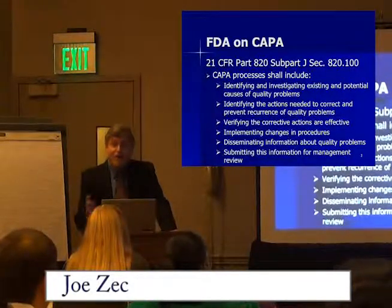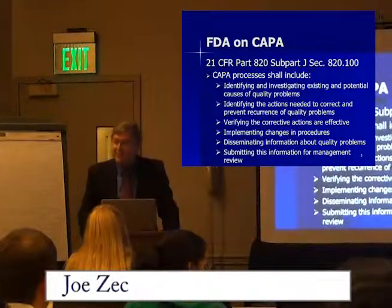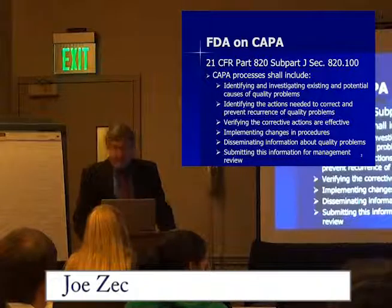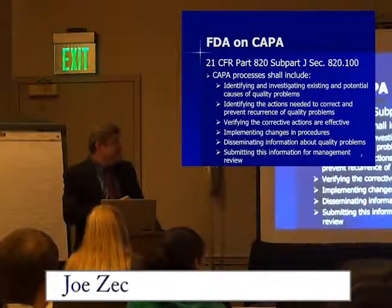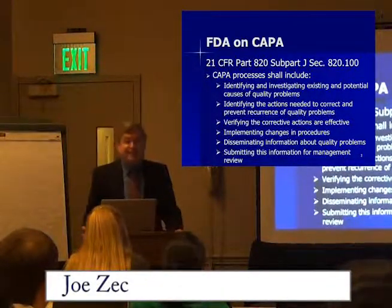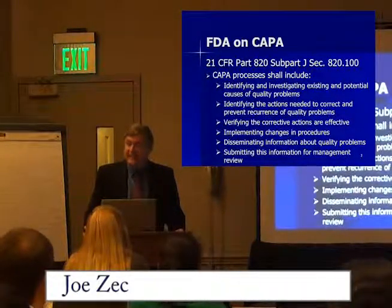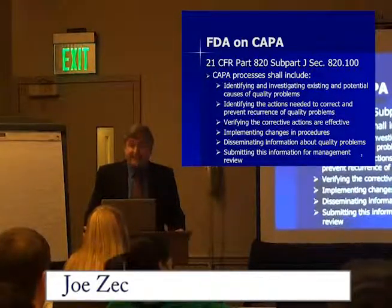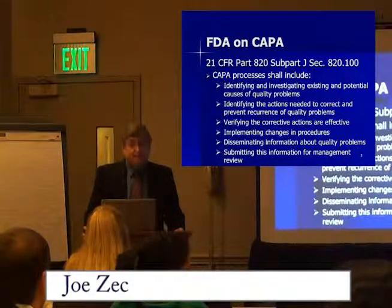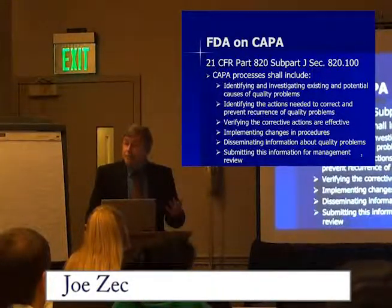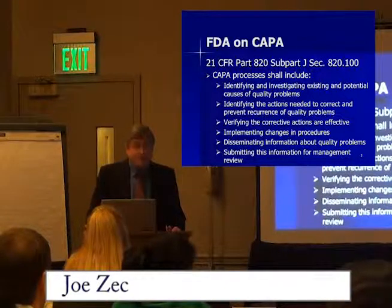There's a lot of important information in that one little bullet. First of all, the word 'and' — identifying and investigating. It's not good enough just to identify the problems; investigating them is certainly the next step we need to take to be able to understand prevention, which is the second part of CAPA.